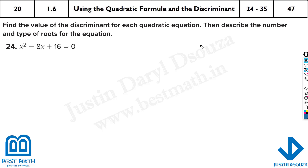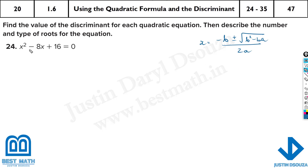I'll write the quadratic formula here. The x value can be found by minus b plus or minus square root of b squared minus 4ac, divided by 2a. This is the quadratic formula. If you apply this, you get the roots — the solutions for this equation. But this particular question only asks for the discriminant, and we need to describe the number of roots and type of roots.